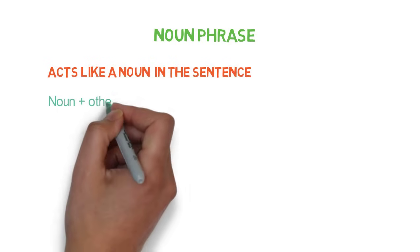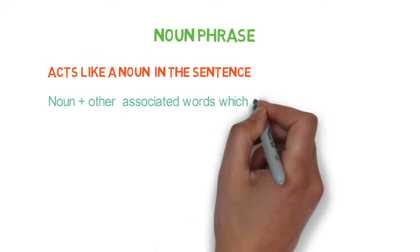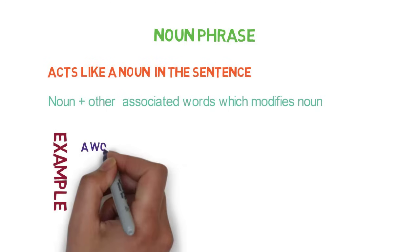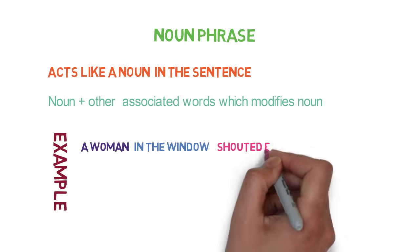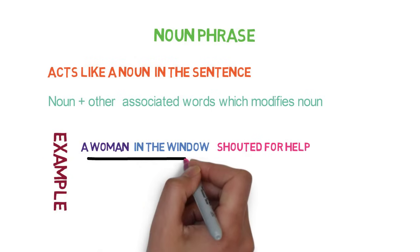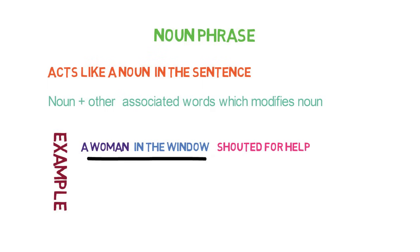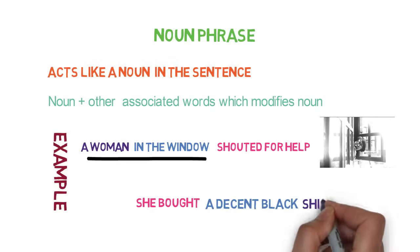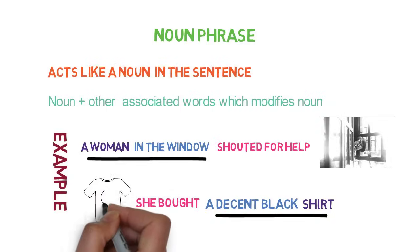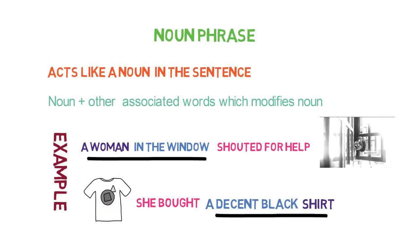It contains a noun and other associated words which modify the noun. For example, 'a woman in the window shouted for help.' Here, 'a woman in the window' is a noun phrase, as 'woman' is a noun and 'in the window' is just describing the noun. Another example: 'she bought a decent black shirt' — 'a decent black shirt' is a noun phrase as it describes 'shirt,' which is a noun.